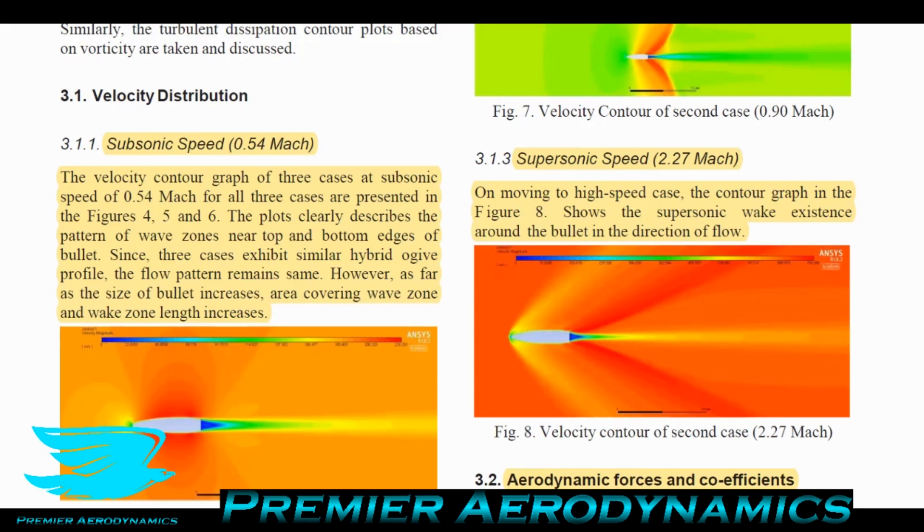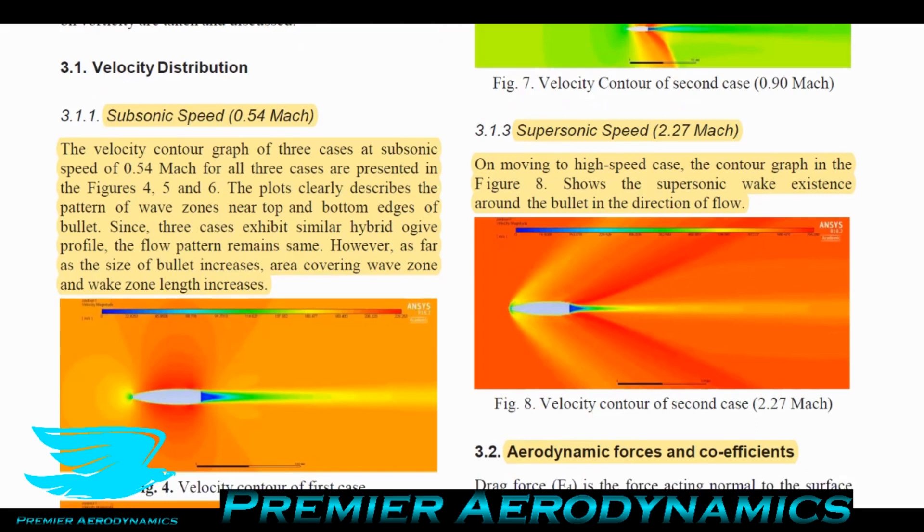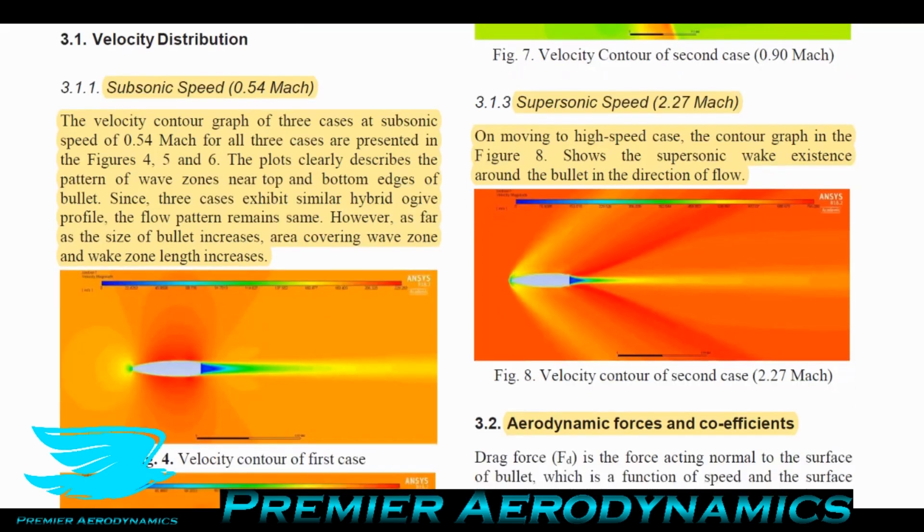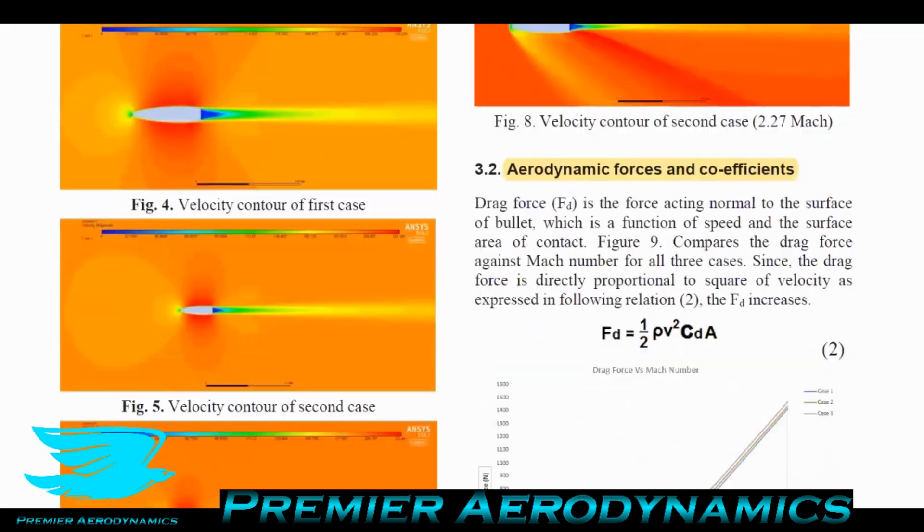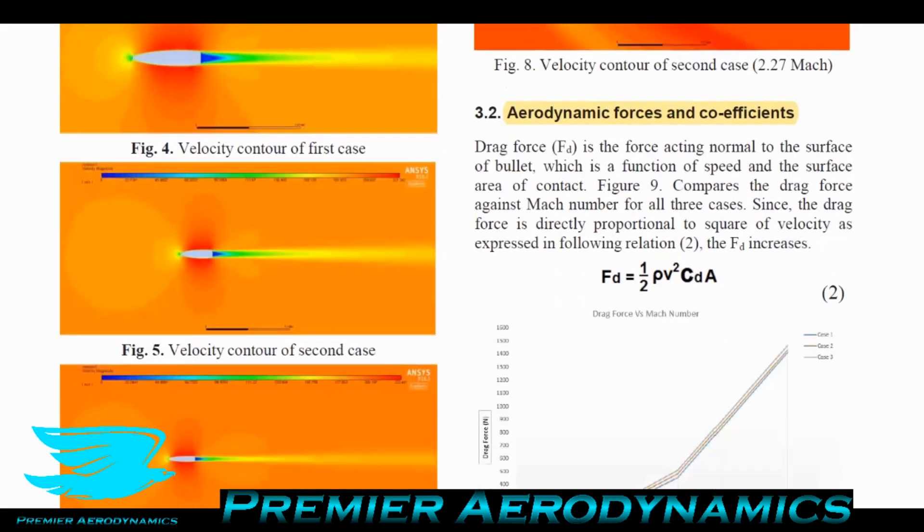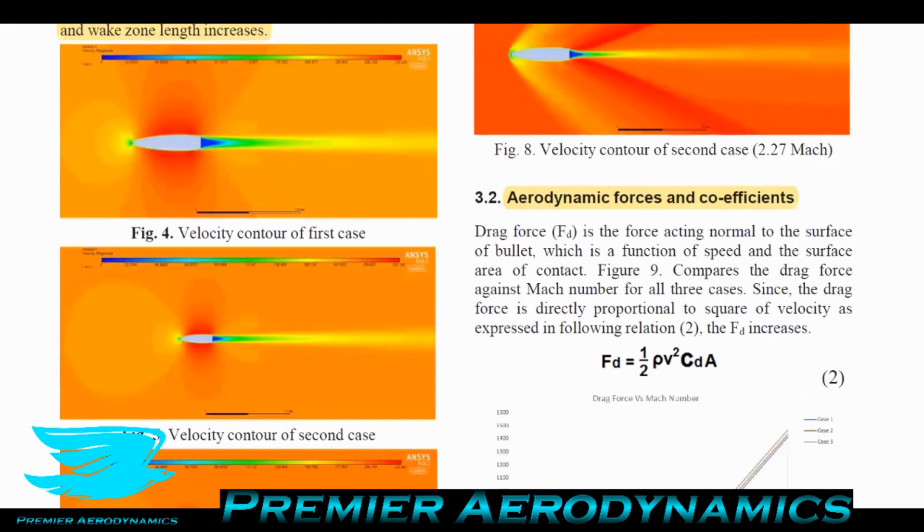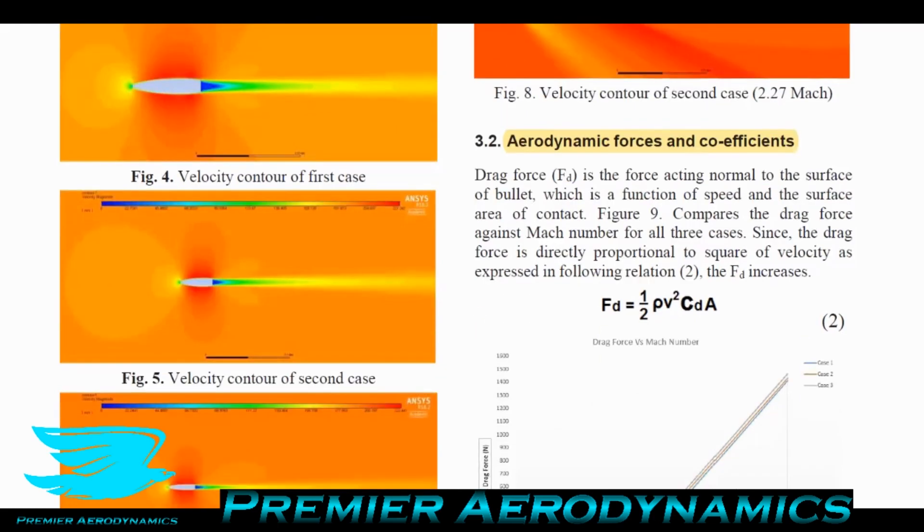They plotted some nice figures showing wave drag near the top and bottom edges of the bullet. Since three cases exhibit similar hybrid ogive profiles, the flow pattern remains very similar between the three bullets at subsonic flow. However, as the bullet size increases, the area covering the wave zone and wake length increase.